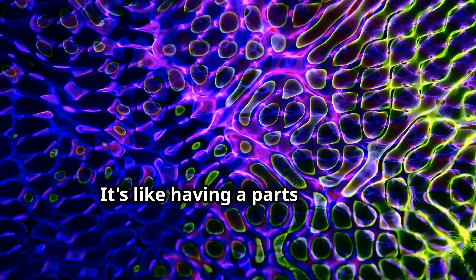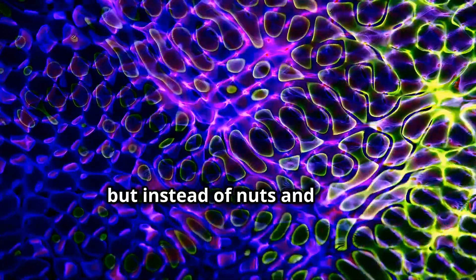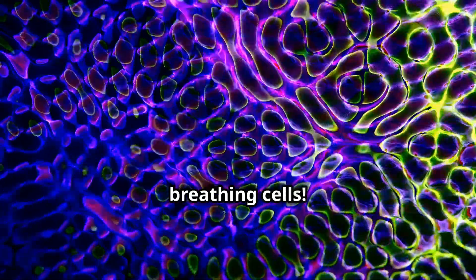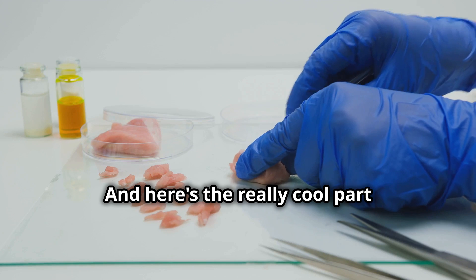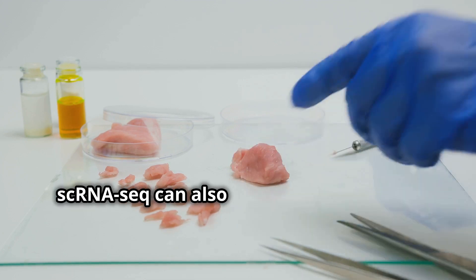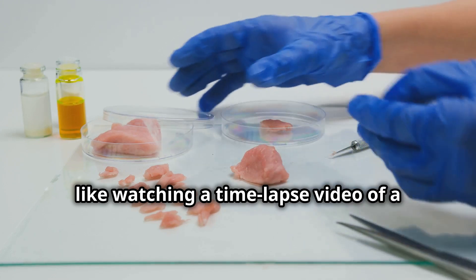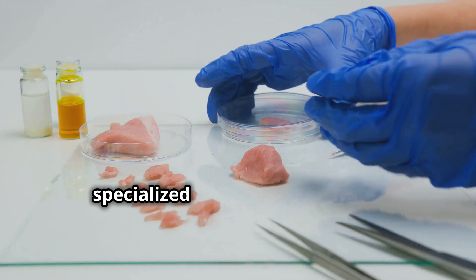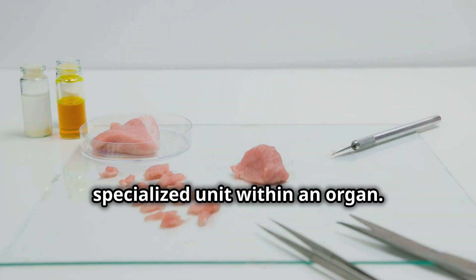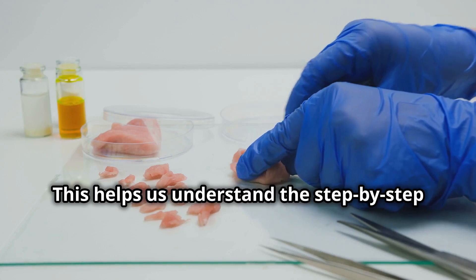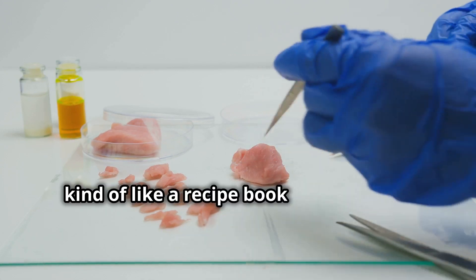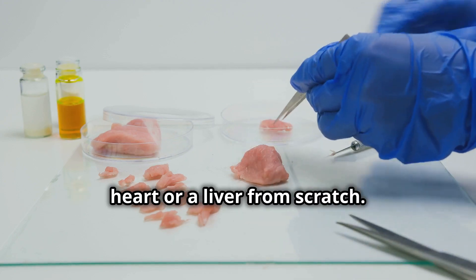It's like having a parts list for a complex machine, but instead of nuts and bolts, we're talking about living, breathing cells. And here's the really cool part: scRNA-seq can also track how these cells change over time, like watching a time-lapse video of a single cell transforming into a specialized unit within an organ. This helps us understand the step-by-step process of organ development, kind of like a recipe book for growing a heart or a liver from scratch.